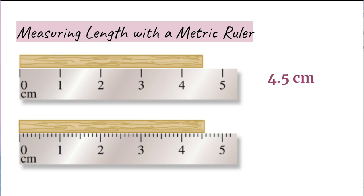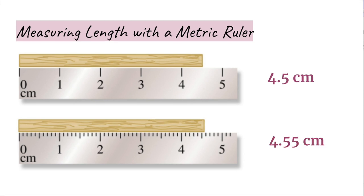Now let's look at the second image. The metric ruler is marked at every 0.1 centimeters, or by millimeters. We can now estimate that the length is halfway between 4.5 centimeters and 4.6 centimeters, so we can report the value as 4.55 centimeters. Note that this is an even more precise and accurate measurement of the object.